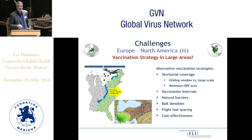The small-scale approach used in Europe might not be applicable in such situations. We need to look for alternative vaccination strategies by reconsidering territorial coverage, vaccination intervals, national barriers, bait densities, flight-line spacing and cost-effectiveness.